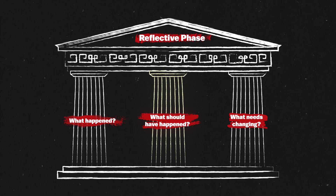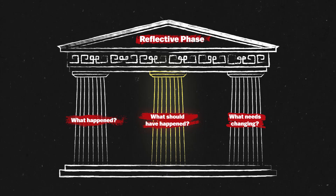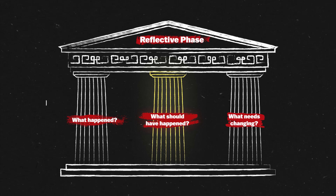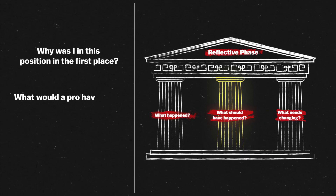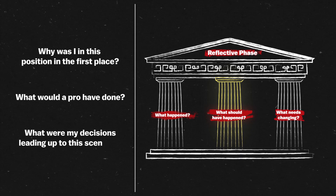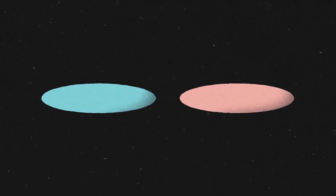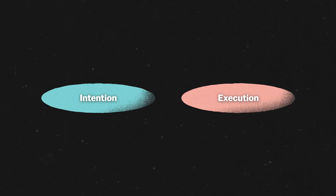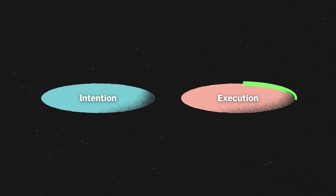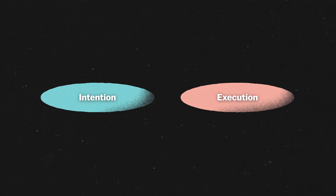Now the more complicated part: what should have happened? Think of this question as a way to take a step back and put your actions into perspective. This is the step where you'll ask yourself questions like, why was I in this position in the first place? What would a pro have done? What were my decisions leading up to this scenario? When analysing whether an action was good or bad, we need to split these actions into two categories: intention and execution. Intention is your goal or rationale with an action - basically what you aim to achieve. Execution is the practical application of your intention, so how well you did the action.